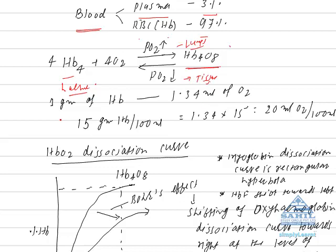1 gram of hemoglobin combines with 1.34 ml of oxygen. Considering 15 grams of hemoglobin in 100 ml of blood, it combines with 20 ml of oxygen. This is the O2 carrying capacity of 100 ml of blood when hemoglobin content is 15 grams.